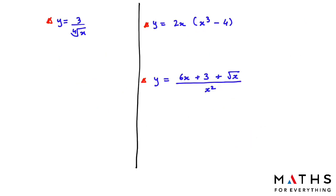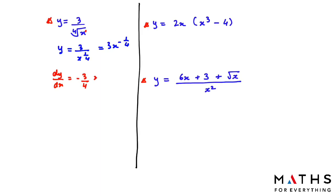Now a more complicated question: y = 3 over the fourth root of x, where the power of x is 1 over 4. Simplify: bring x to the numerator giving x to the power of negative 1 over 4. Now differentiate: multiply 3 by negative 1 over 4 to get negative 3 over 4. Then subtract 1 from negative 1 over 4: negative 1 over 4 − 1 = negative 5 over 4. So dy/dx = negative 3 over 4 times x to the power of negative 5 over 4.